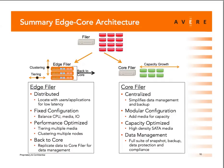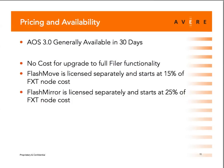Looking at slide 11 on schedule and pricing: AOS 3.0 will be available in the next 30 days. The edge filer functionality is a no-cost upgrade for any FXT products in the field and comes standard on any product sold today — this gives you the full filer that terminates all NFS and CIFS requests locally. Flash Move and Flash Mirror are licensed separately and start at about 15% of the cost of a node.